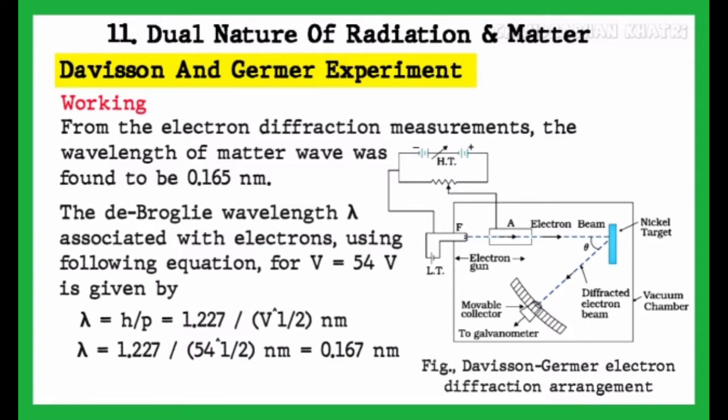The de Broglie wavelength lambda associated with electrons using the following equation for V equals 54 volt is given by lambda equals h upon p, or lambda equals 1.227 upon root V nanometer.